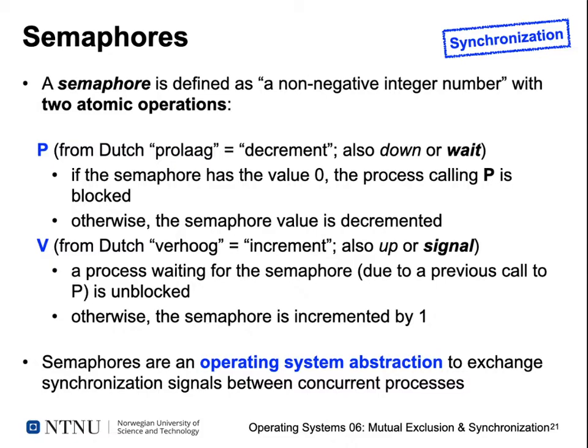The names of these operations are derived from something Dijkstra invented — one of the famous Dutch computer scientists. Unfortunately, the first papers on semaphores were written in Dutch, so he used Dutch terms to name the operations. The first operation is called P, from the Dutch word 'prolaag', which means to decrement — also called 'down' or 'wait' in other contexts. The P operation first checks the value of the semaphore. If the semaphore value is zero, this indicates the resource belonging to that semaphore is already in use.